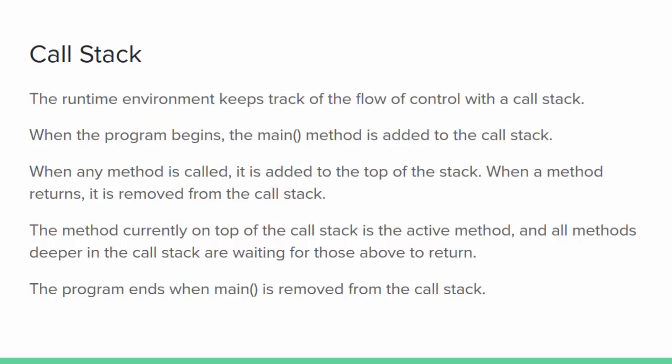To keep track of the flow of control as it passes between methods and objects, the runtime environment manages a structure called the call stack. Main is the first method called, so it's the first method added to the call stack. When any subsequent method is called, it's placed on top of the method that called it. When a method is finished, it's removed from the top of the call stack and control returns to the previous method at the point where it left off. Whatever method is currently on top of the call stack is the active method, and every method below is waiting for the method it called to return. When main completes its work and is removed from the call stack, the call stack is empty and the program ends.